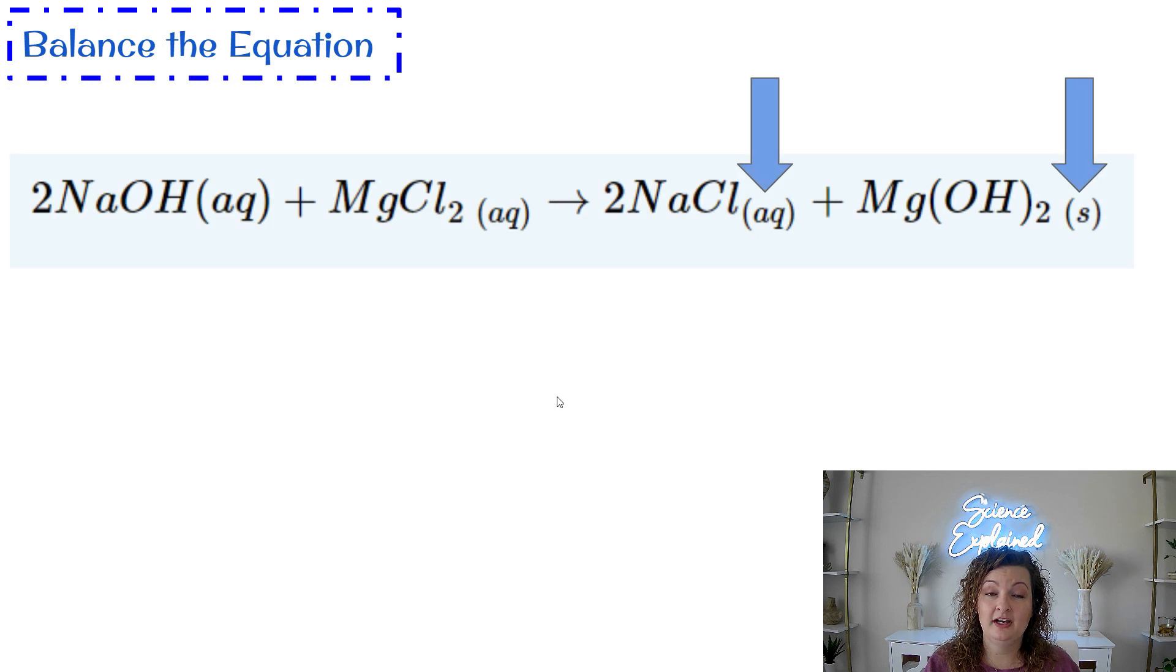So again, make sure you have that equation balanced. Once you balance it now, you can go back and add your parentheses. We know that the NaCl will be soluble and dissolving. So it's going to get an aqueous solution. And then we know the Mg(OH)2 is going to form a precipitant. It's going to form a solid and we need to indicate that in our equation.